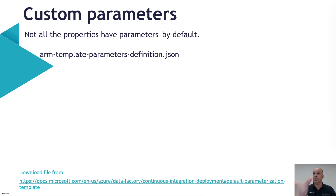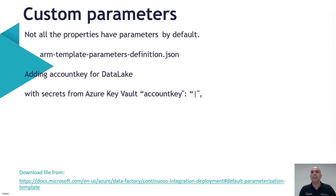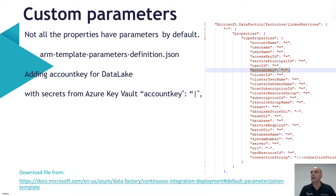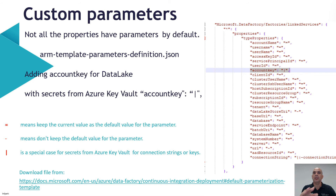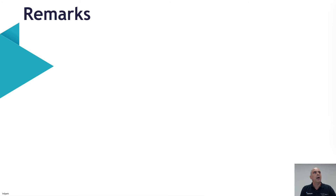The ARM template parameter definition file must have a specific name — you can download it from the link provided. For example, if we want to add the account key for a data lake, since that's not a default parameter within Azure Data Factory to Azure DevOps, we need to define some secrets. There are a couple of options: a pipe sign means it's a secret, other values can keep the default value, not keep the default value, or there's a special case for the secrets file.